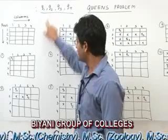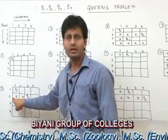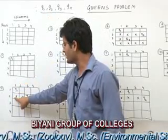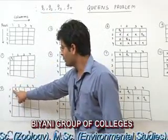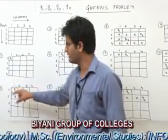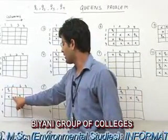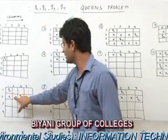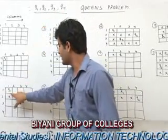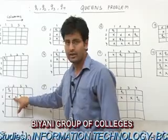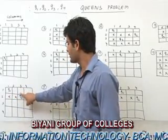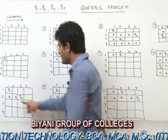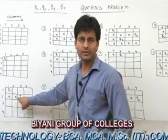Now, queen Q2 is to be placed in row 2. Column 1 is not a valid position for Q2 because Q1 and Q2 would be in the same column. Column 2 is also not valid because Q1 and Q2 would be in the same diagonal. Column 3 is the first valid position for Q2.